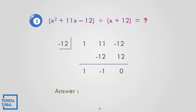So the quotient: x squared divided by x is x. The result is 1x minus 1, so the final answer for the quotient is x minus 1.